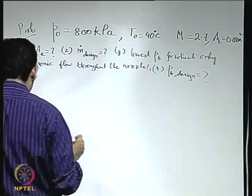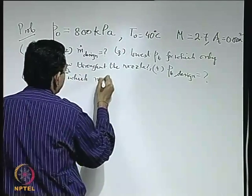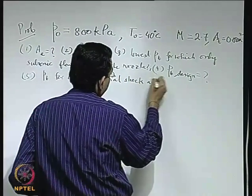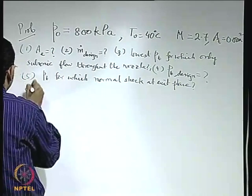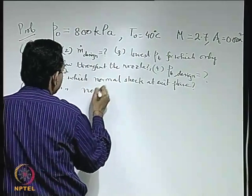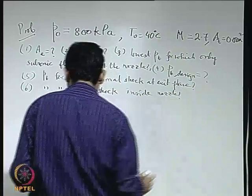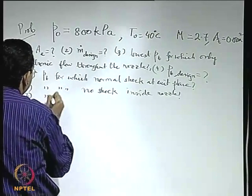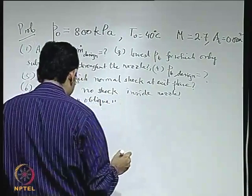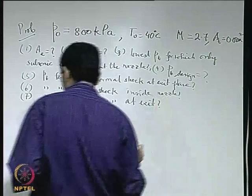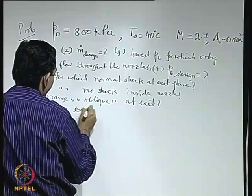Number 5: what is the back pressure for which there is normal shock at the exit plane? Number 7: what is the back pressure for which there is oblique shock at the exit plane? And number 8: what is the back pressure range for which there is an expansion wave at the exit?